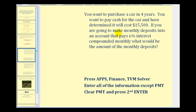For our first example, if you want to purchase a car in four years and pay cash, you have determined it will cost fifteen thousand five hundred dollars. If you're going to make monthly deposits into an account that pays six percent interest compounded monthly, what would be the amount of the monthly deposits?